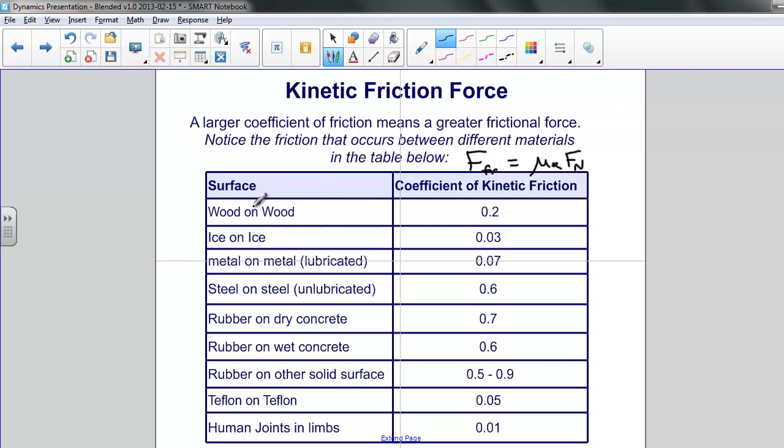If we look at this table, there's some really interesting things to note here. Here we have things like wood on wood with a coefficient of kinetic friction of 0.2. That means that for an object on a horizontal surface, the frictional force will be 20% of the weight of the object.